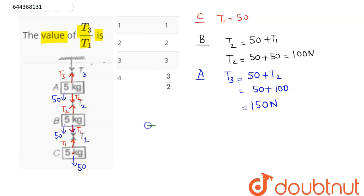We need the ratio of T3 divided by T1. T3 we have calculated as 150, T1 is 50. So this ratio comes as 3 ratio 1, which is equal to 3. Hence 3 is the correct answer.